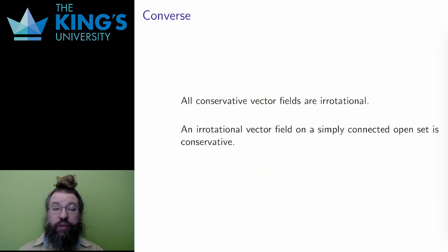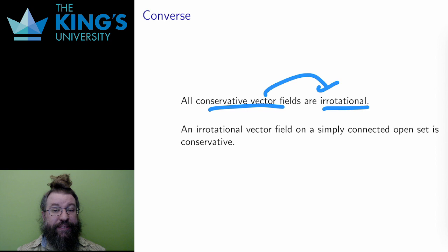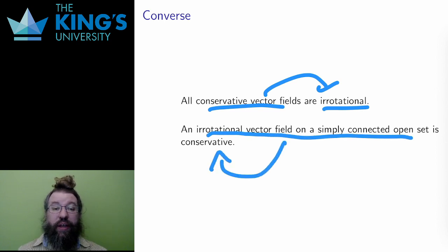This lets me finish the previous question. If a field is conservative, its curl is zero. It is irrotational. That was necessary, but not sufficient. On a simply connected set, it is sufficient. Any irrotational vector field on a simply connected open set is conservative. And this is how I will check. I will see if the domain is simply connected, and then I will see if the curl is zero. If both are true, the field is conservative.